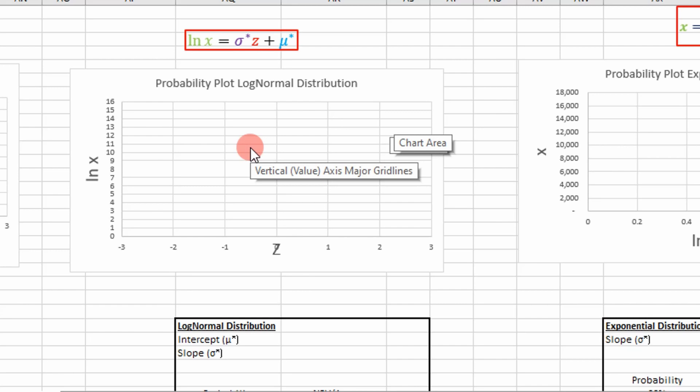In the case of a log normal distribution, our straight line is going to be an equation of this form up here. So the first step we want to do is plot the natural log of our random variables or our data versus our z-score.